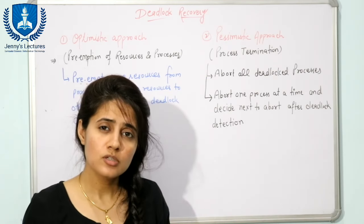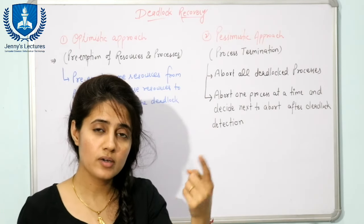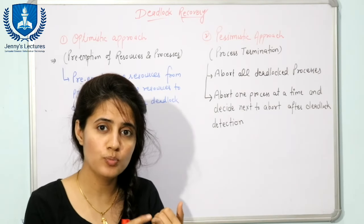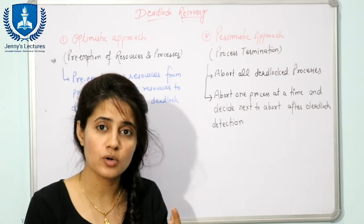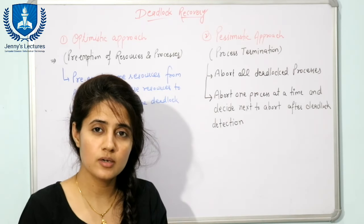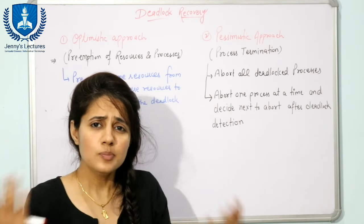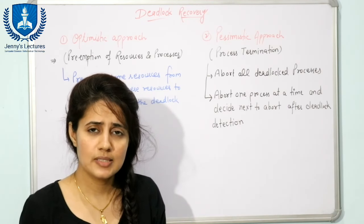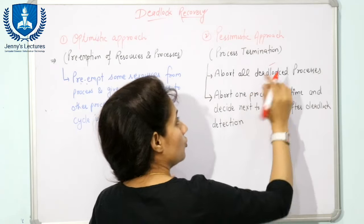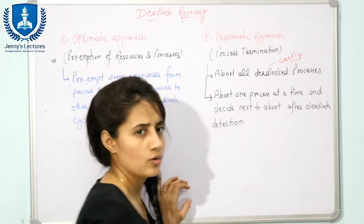As discussed in the previous video, if four processes P1, P2, P3, and P4 are in a deadlocked state, the first method is to kill all four processes. However, killing all processes that are in a deadlocked state may be very costly — that is the main drawback of this approach.